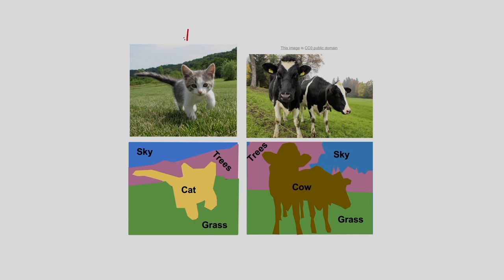Here I have shown the concept of semantic segmentation again. Corresponding to an input image you can see labels like sky, cat, grass, and trees. Similarly, corresponding to another image you can see labels like trees, cow, sky, and grass. So these labelings can be done in semantic image segmentation.